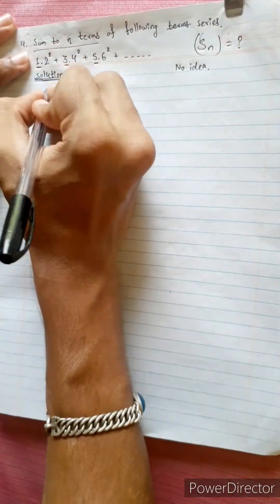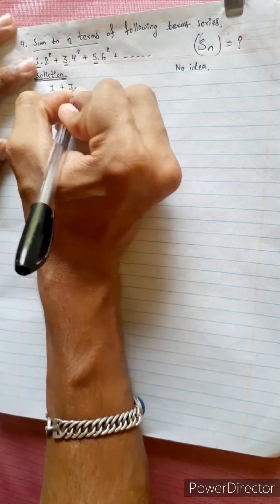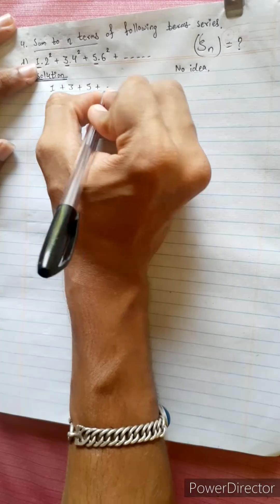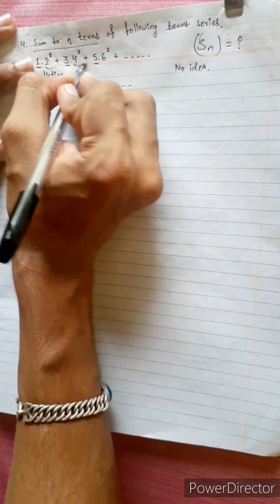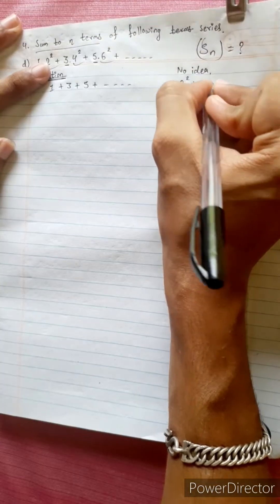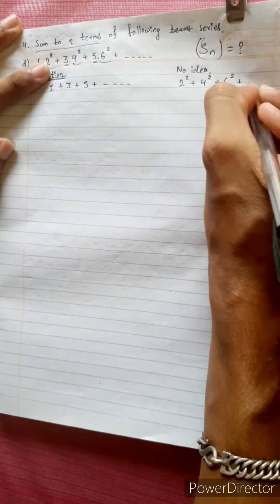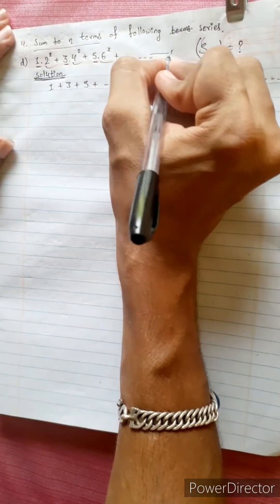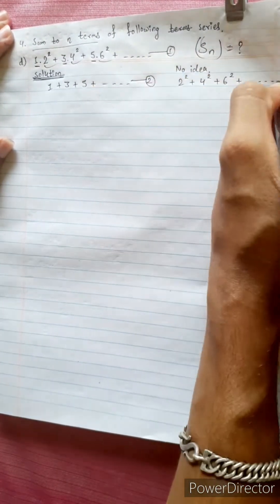Let's separate. First term: 1 plus 3 plus 5 plus dot dot dot. This is the last term. Second term: 2 square plus 4 square plus 6 square plus dot dot dot. Let's suppose equations 1, 2 and 3.